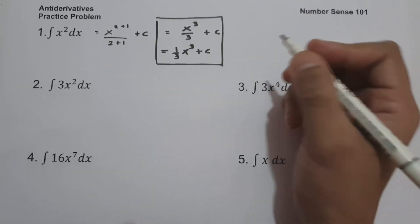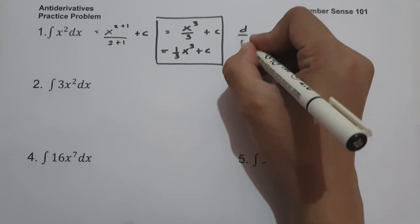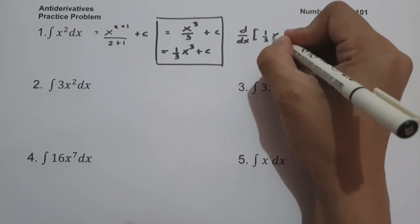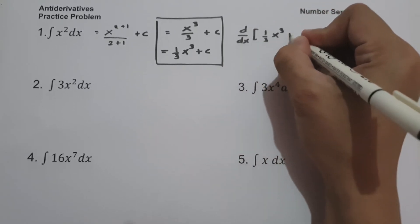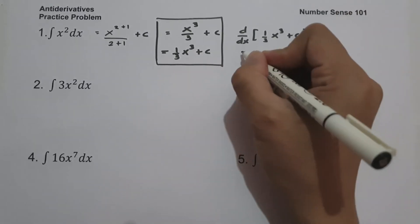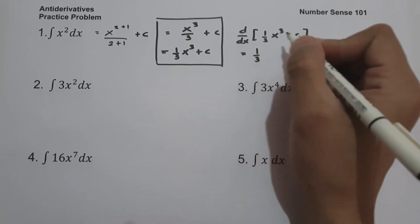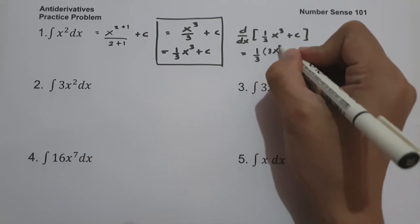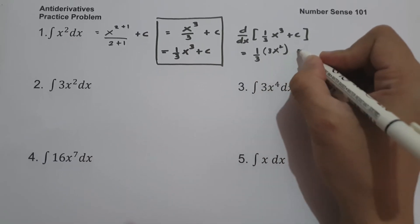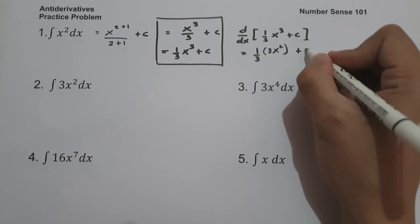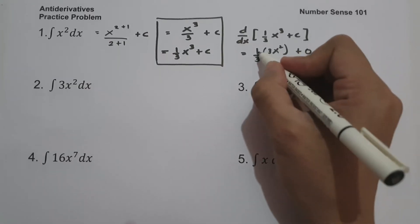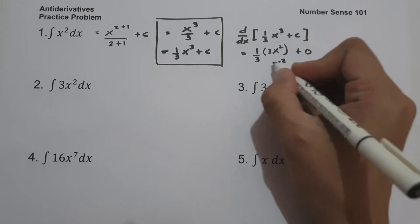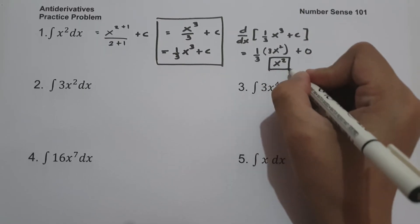If you want to check your answer, what is the derivative of 1 third x cubed plus c? We have 1 third and the derivative of x cubed is 3x squared, and the derivative of a constant is 0. So 1 multiplied by 3x squared divided by 3 gives us x squared. So we come up with the same answer.